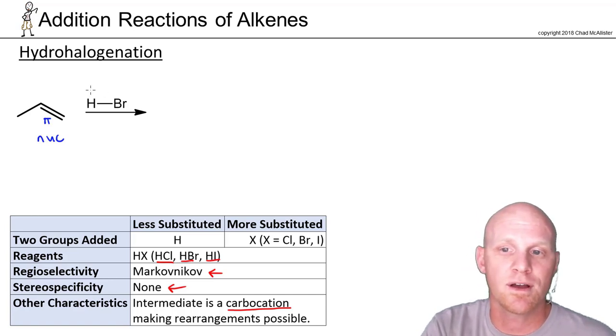If we look at HBr here, hydrogen is less electronegative and it's partially positive. Bromine is more electronegative, partially negative. Our alkene here is going to actually react with the electron-deficient hydrogen. There's our electrophile. Hydrogen can only have one bond, so the old one has to break. Bromine picks up those electrons.